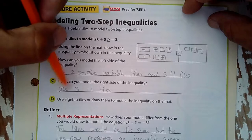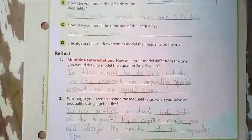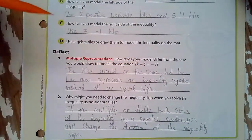And the right side is three negative one tiles. All right. How does your model differ from one you would draw for 2k plus 5 equals negative 3?